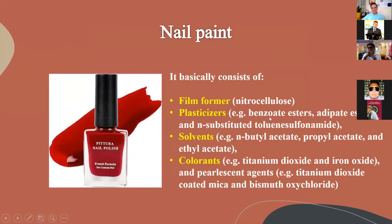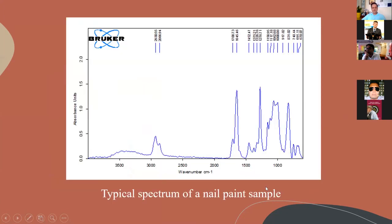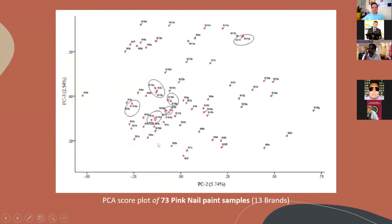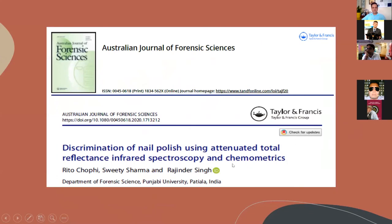Another material is nail paint, also referred to as nail polish. It basically consists of film formers such as nitrocellulose, plasticizers like benzoate esters, adipate esters, and sulfonamide derivatives, solvents like n-butyl acetate, propyl acetate, and ethyl acetate, and colorants like titanium dioxide and iron oxide, and pearlescent agents like titanium dioxide-coated mica and bismuth oxychloride. Principal component analysis was utilized for the differentiation of 73 pink-colored nail paint samples belonging to 13 brands, and the majority could be differentiated from each other. A study was published in the Australian Journal of Forensic Sciences in 2021.